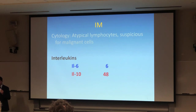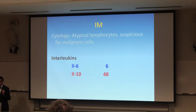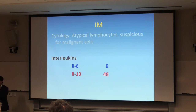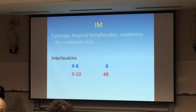The interleukin levels came back: IL-6 is 6 and IL-10 is 48, so one is much higher than the other. IL-6 is elevated in inflammation — that's the reason you see studies like STOP-Uveitis where we use IL-6 inhibitors for inflammatory cases, because IL-6 is elevated in many cases of uveitis. IL-10 has been shown to be quite elevated in patients with vitreoretinal lymphoma.